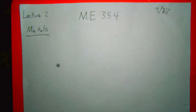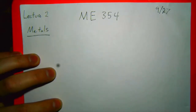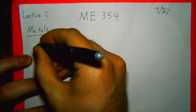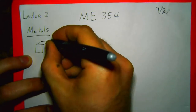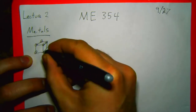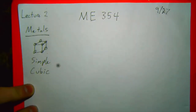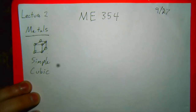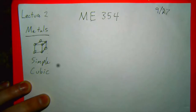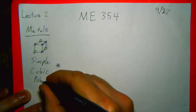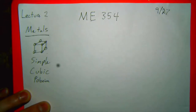Metals, hopefully you all know, generally form crystal structures. Those crystal structures can take a number of different forms. The most common ones: simple cubic is just a box with atoms at the corners. It turns out almost no metals actually form simple cubic — there's only one, and it's polonium, which is a metal I don't think gets used very often.